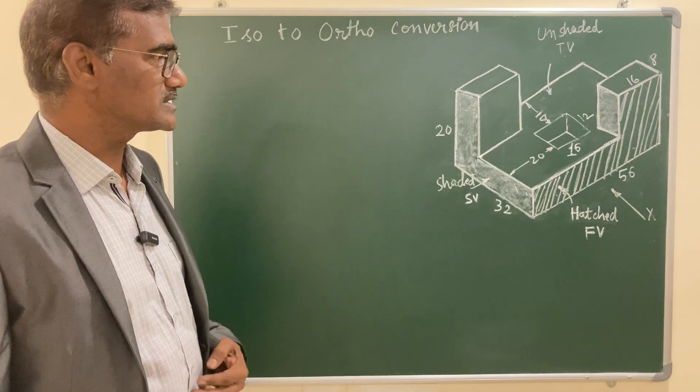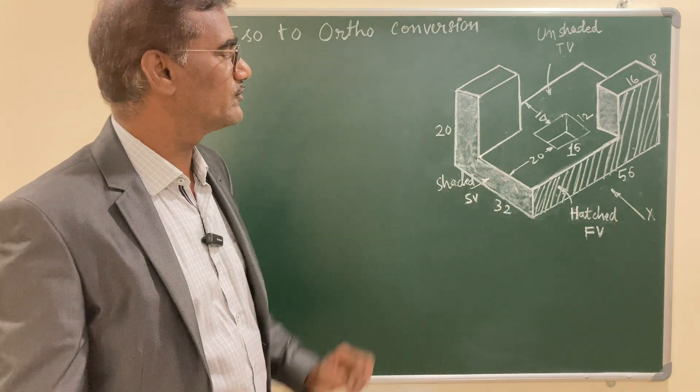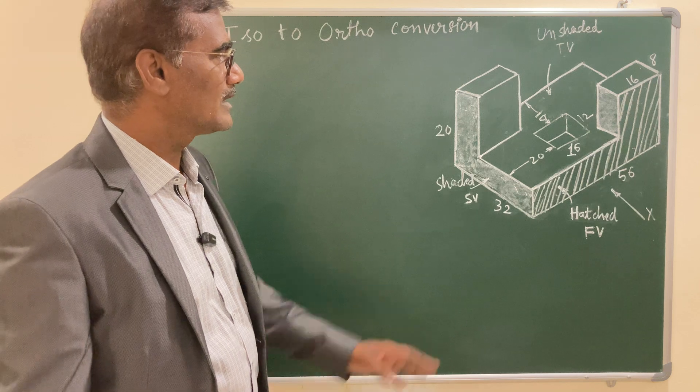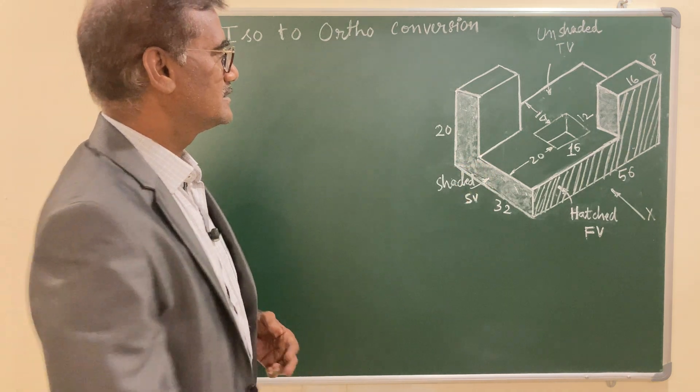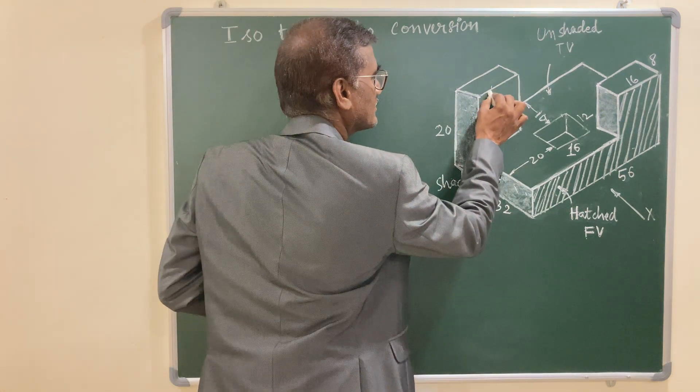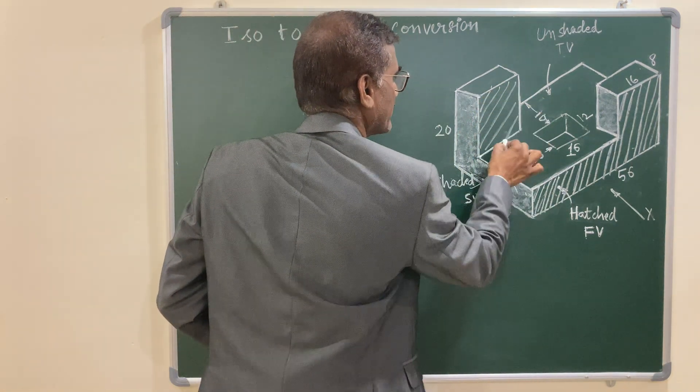Let us see the object. X indicates the direction of the view for the front view. And if you see from the front, you can see that it is this particular surface. You can see that it is a hatched surface you can see in the front view.